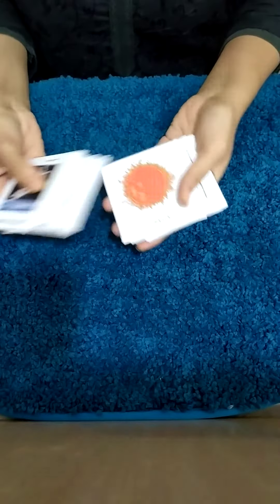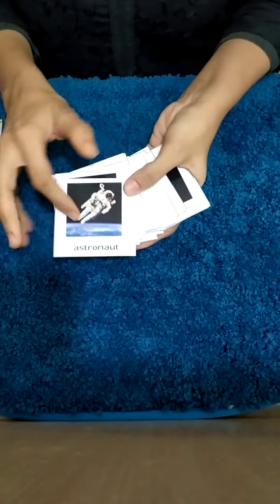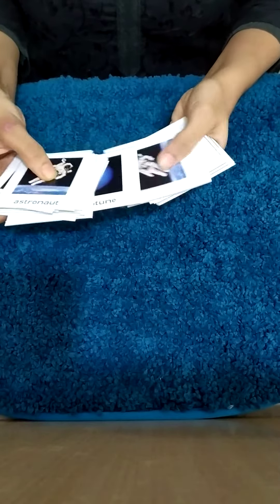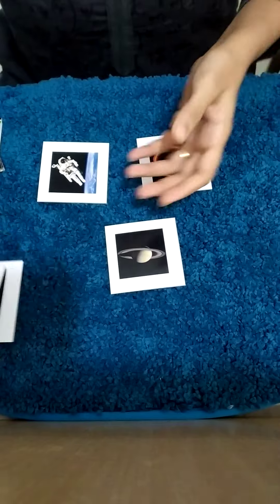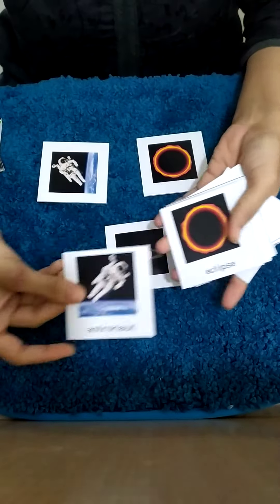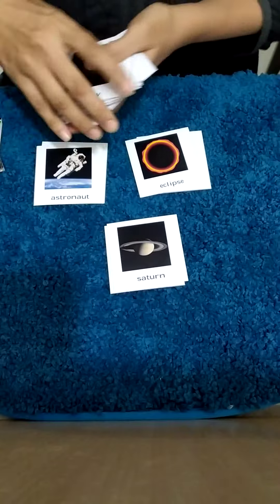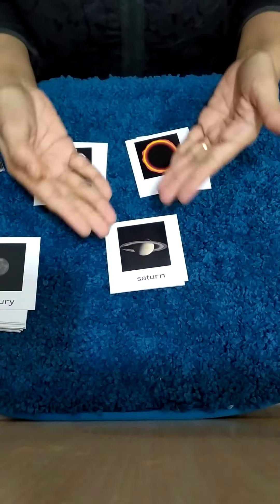Now how this works is you'll have a set of blank cards and you'll have a set of written cards. So what you need to do is you will be displaying out the blank cards first and they will be matching it. I'm just showing you an example with the ones that are written.